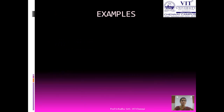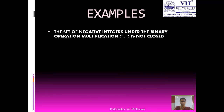Now let us see some examples. The set of negative integers under the binary operation multiplication is not closed. For example, if you consider minus 2 and minus 3 and apply multiplication, minus 2 into minus 3 equals plus 6, which does not belong to the given set G. So it is not closed.